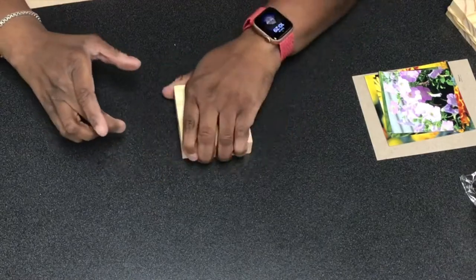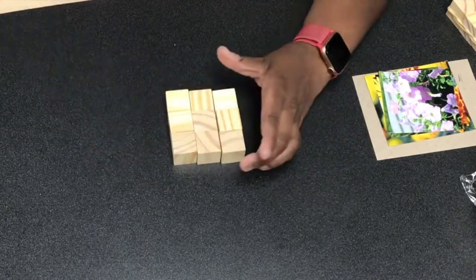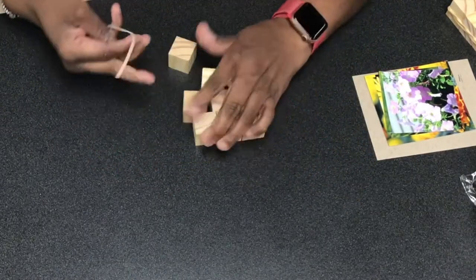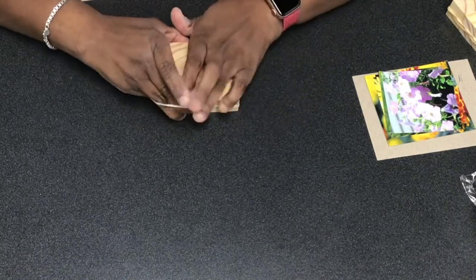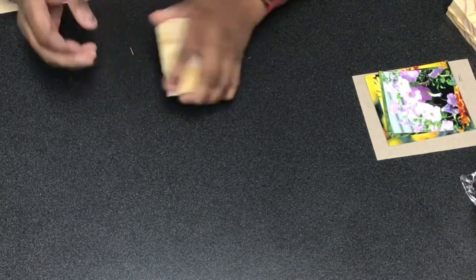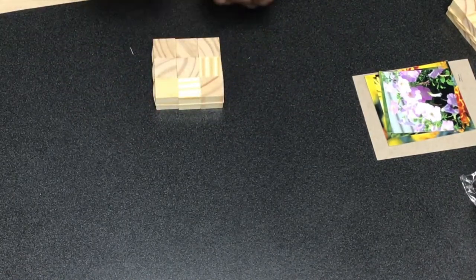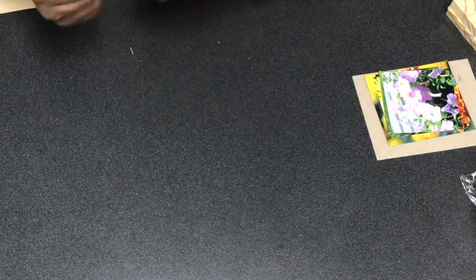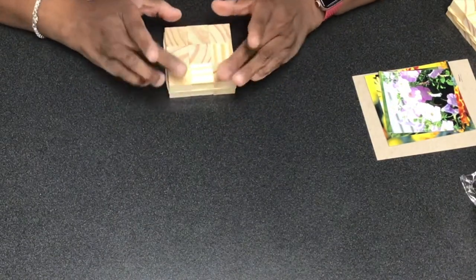When you get your kit you're going to get nine wooden blocks. I recommend getting some rubber bands like I said and putting the rubber band around the blocks to keep them in place.